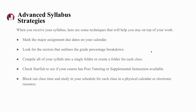And finally, here are some advanced syllabus strategies. This is what I tell students in the workshops that the ARC runs throughout the semester. When you receive your syllabus, mark down the major assignment due dates — keep a calendar — so you're not constantly checking back to the syllabus. You want to look for the section that outlines the grade percentage breakdown: each major assignment, how much is it worth? Also, compile all of your syllabi into a single folder or create a folder for each class, keeping all your information in one place so you're not juggling everything or trying to keep it all in your working memory.